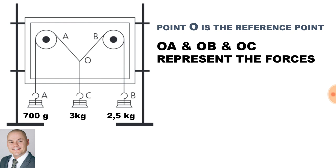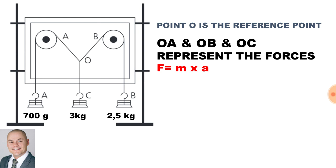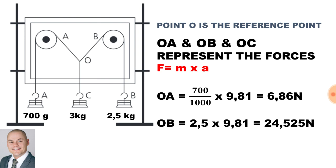Here we have a pulley system with two pulleys, three ropes, and we can represent those ropes by vectors or forces. There are three weights suspended from the ropes: 700 grams, 3 kilograms, and 2.5 kilograms. To calculate the force, it is mass multiplied by acceleration of 9.81. Force OA: 700 grams divided by 1000, multiplied by 9.81, gives 6.86 Newtons. Force OB: 2.5 kilograms multiplied by 9.81 gives 24.525 Newtons. Force OC: 3 kilograms multiplied by 9.81 gives 29.43 Newtons.